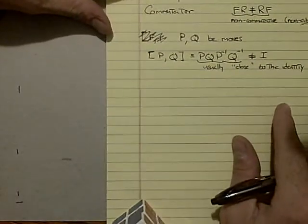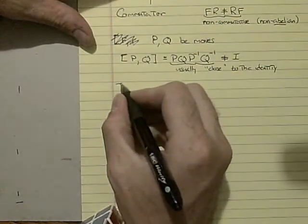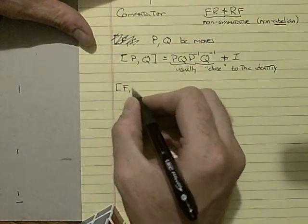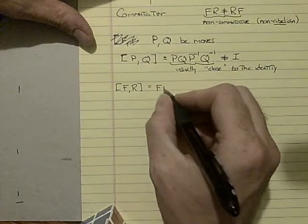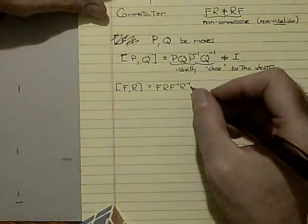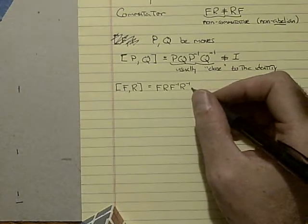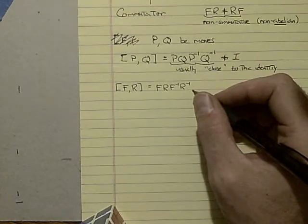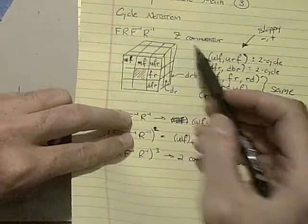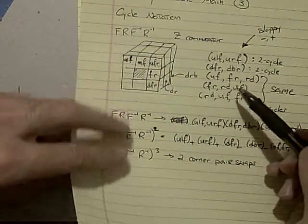So there are a couple rather famous examples. One is the Z commutator. So if you do F, R, or any two adjacent sides, this is F, R, F inverse, R inverse. And we've done this one already, or I thought about doing it. No, we did it in the third video, where we introduced cycle notation. We did this move. It's the Z commutator. And we wrote out its cycle notation. It gave us a pair of corner swaps and a three cycle on the edges.